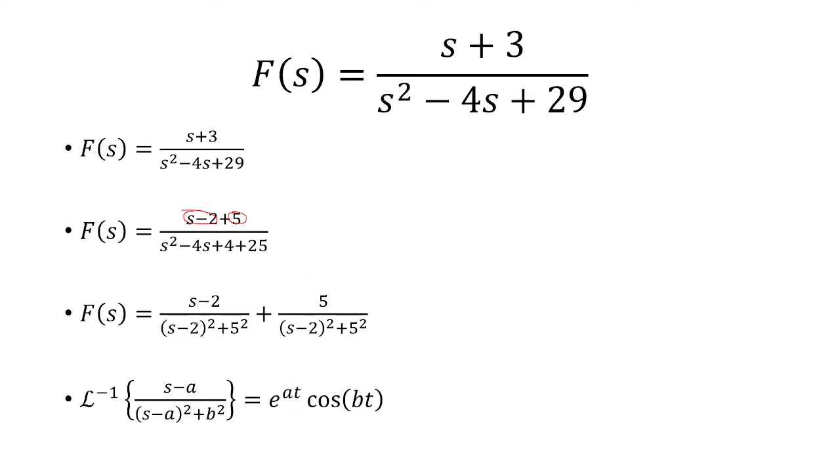That's what we're going to use for the first fraction. And for the second fraction, we have the inverse Laplace transform of b over s minus a quantity squared plus b squared is equal to e to the at times sine of bt.